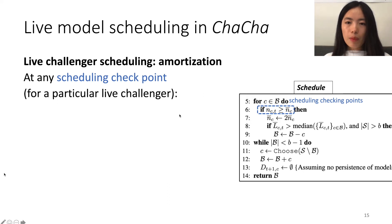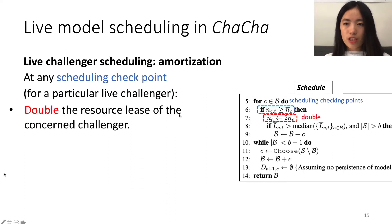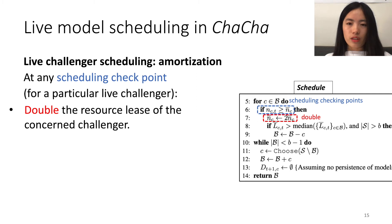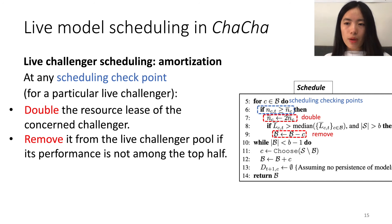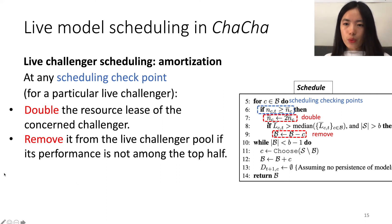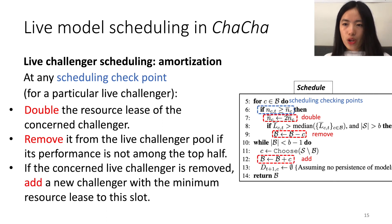First, we double the resource leads of the concerned Challenger, such that if this Challenger is scheduled to run again, we can run it for a longer time. Then we remove it from the live Challenger pool if its performance is not among the top performing ones. Otherwise, we keep it running. Note that since the resource leads have doubled, we can run it for a longer time.